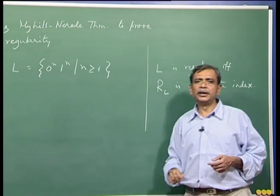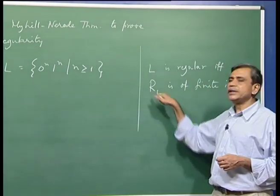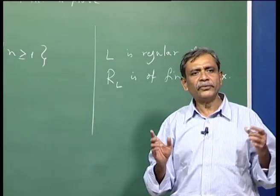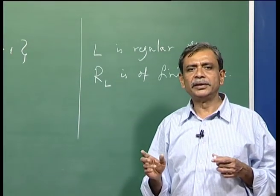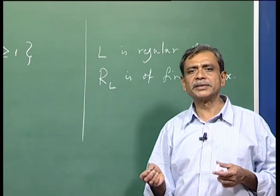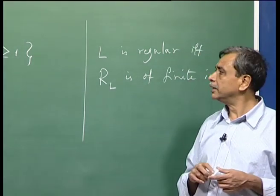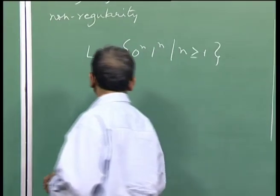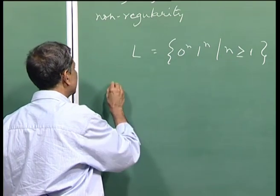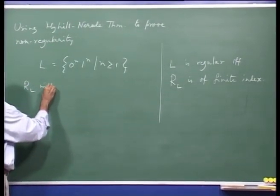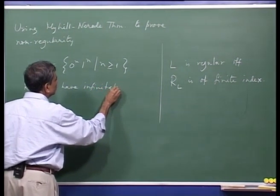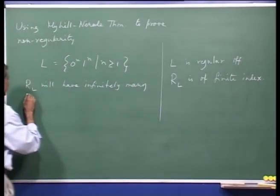Recall, one thing that the Myhill-Nerode theorem says is that L is regular if and only if R_L is of finite index. In other words, if the equivalence relation R_L for language L has an infinite number of equivalence classes, then the language is not regular; and if the number of equivalence classes is finite, then the language is regular.